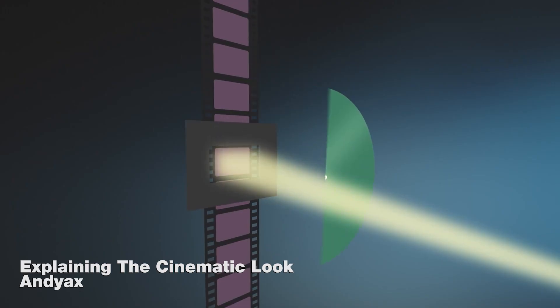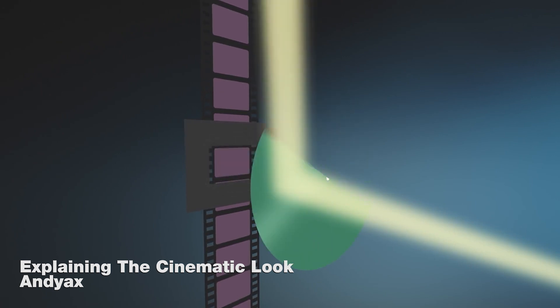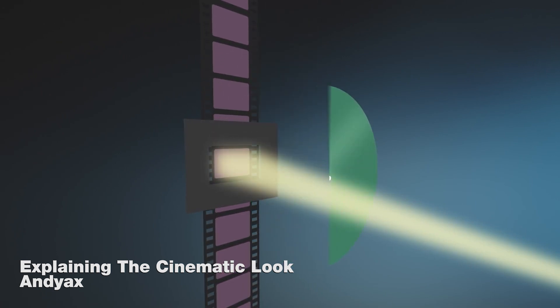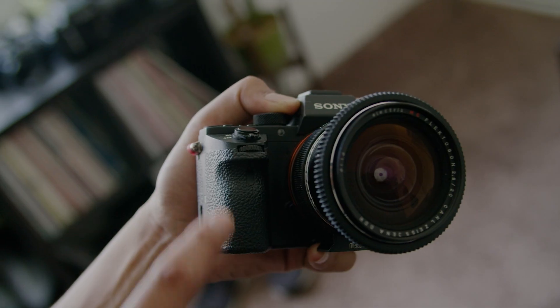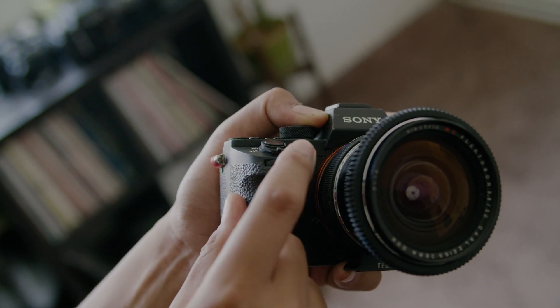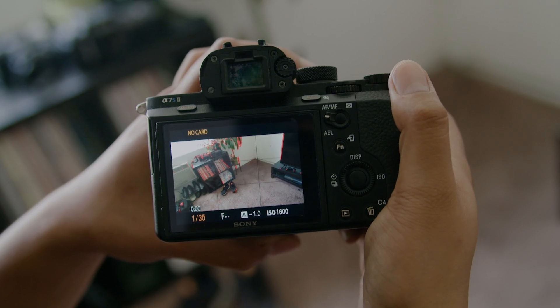If the shutter never closed, you would be getting a constant stream of light and the video would be overexposed — just white. The shutter's job is to open and close to allow a certain amount of light to hit the camera sensor. The speed at which the shutter opens and closes is called shutter speed, which is why shutter speed is measured in time.